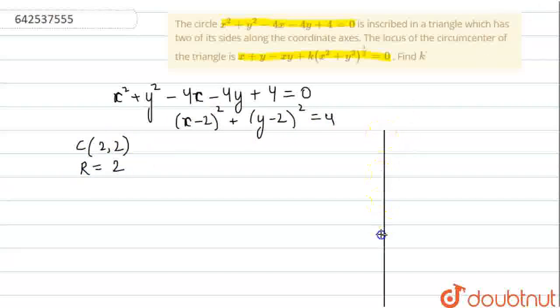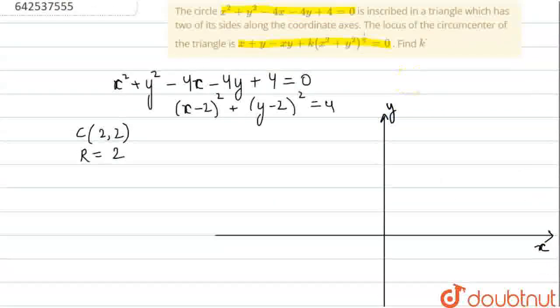Let us draw the circle. Suppose these are the coordinate axes, y and x. We have a circle at centre (2, 2) having radius 2. The triangle has two of its sides along the coordinate axes. This is the triangle having its two sides along the coordinate axis.